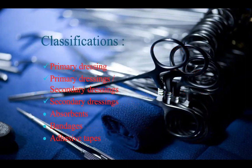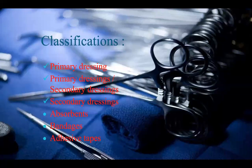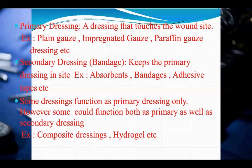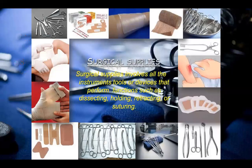Classification: there are primary dressings and secondary dressings. Primary dressings touch the wound site — for example, plain gauze, impregnated gauze, paraffin gauze dressing, etc. Secondary dressings keep the primary dressing in place — for example, absorbent bandages, adhesive tapes, etc. Some dressings function as primary dressings only; however, some could function both as primary and secondary dressings, such as composite dressings and hydrogels.